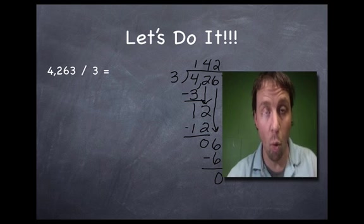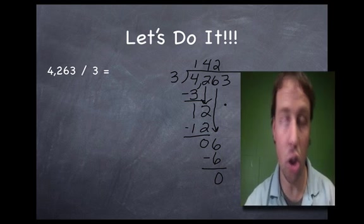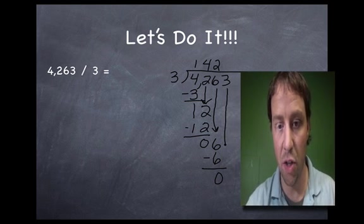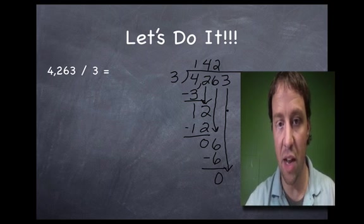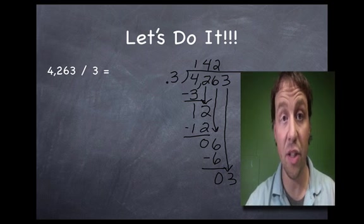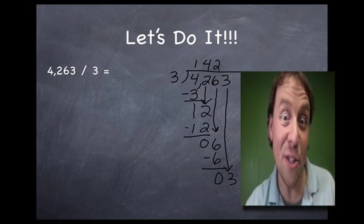Now I move my head over one more time. I have a 3. The 3 falls all the way down here. See how I'm writing the little arrows when the numbers fall down? I'm having them fall down one at a time. And then I'm actually doing... These have been pretty easy because 3 goes into these numbers evenly.